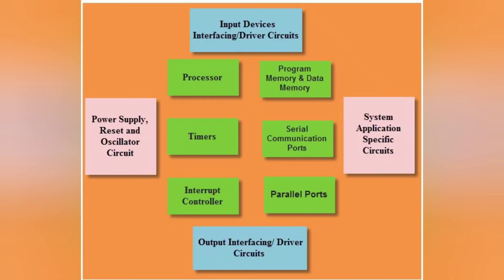Block diagram of embedded system. An embedded system consists of various elements: processor, timer, interrupt control, parallel ports, serial communication ports, program memory, data memory, input devices interfacing, driver circuit, output interfacing, driver circuitry, power supply, reset and oscillator circuit, and system application specific circuit.